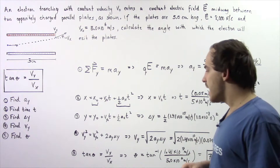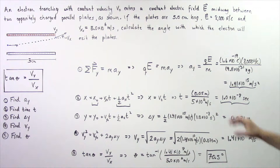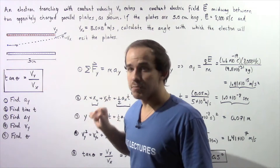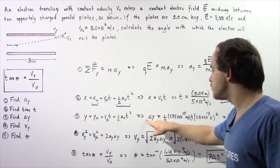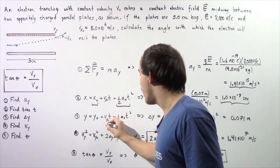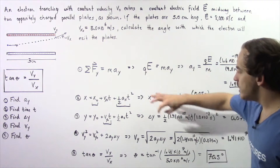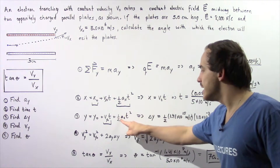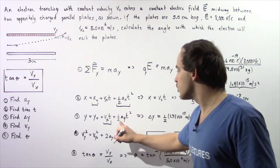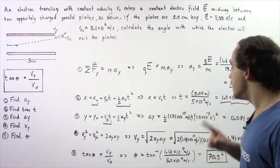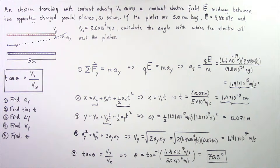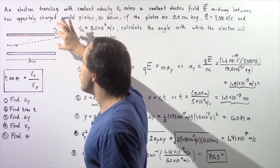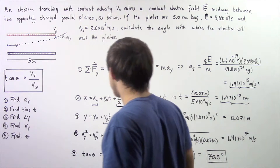In step 3, we use the time and acceleration from the previous steps to find the vertical displacement. Since the initial velocity along the y-axis is zero, the equation reduces to: change in y equals one-half times Ay times t squared. Plugging in Ay equals 1.41 times 10 to the 15 m/s² and t equals 1 times 10 to the negative 8 seconds, we get a vertical displacement of approximately 0.071 meters — the distance the electron travels upward across the plates.